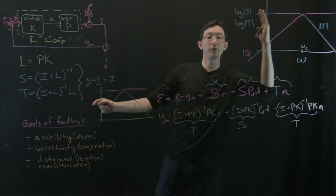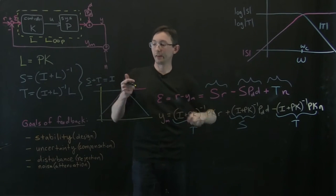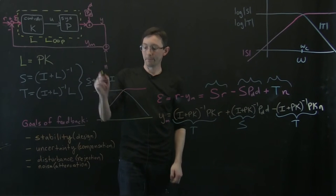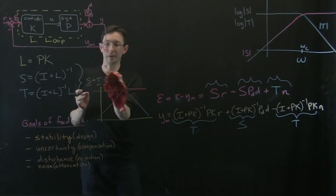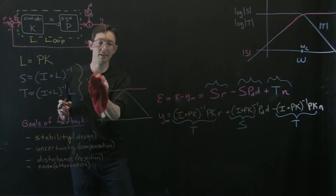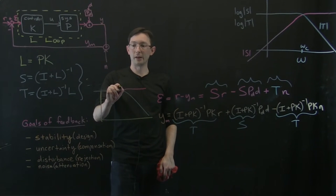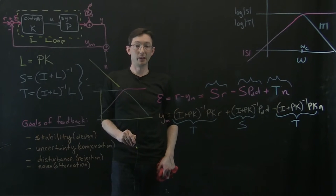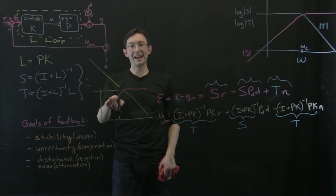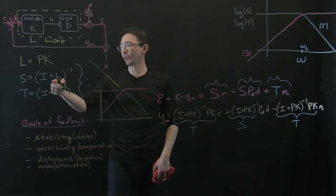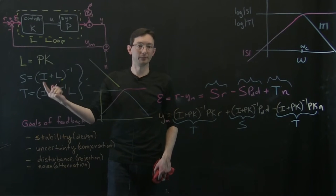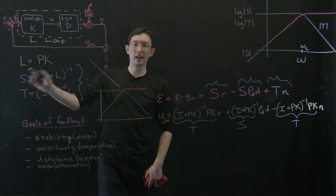And so if I want S to be really, really small, then the only way I can do that is to make L really, really big. So for low frequencies, what I want is I want my L to be really, really big. I'm going to erase this. We know that S plus T equals I. So for low frequencies, what I want is L to be really, really big. That will give me, because S is kind of like 1 over 1 plus L. And so if L is really big, S will be really small.